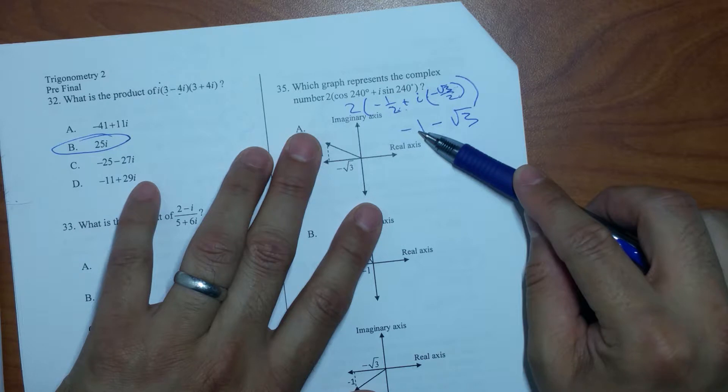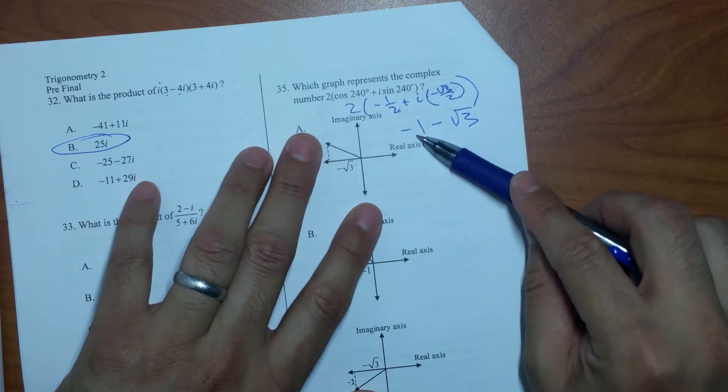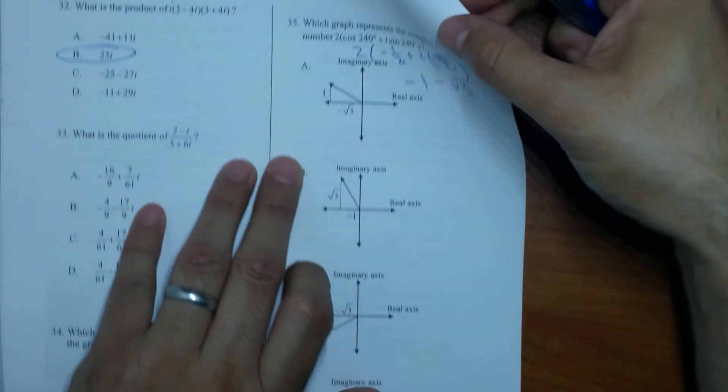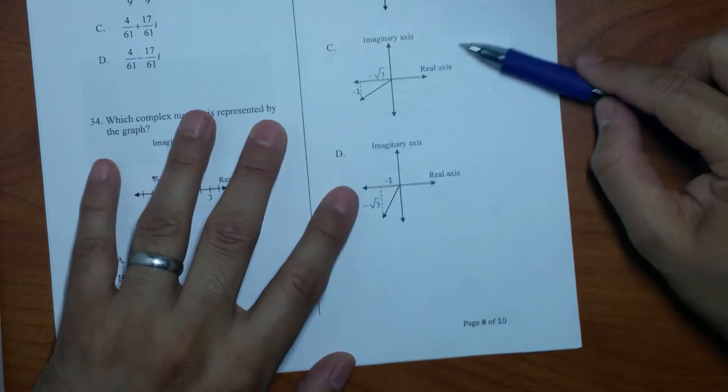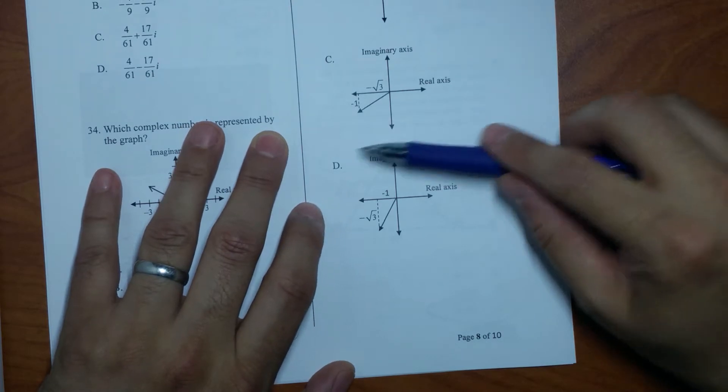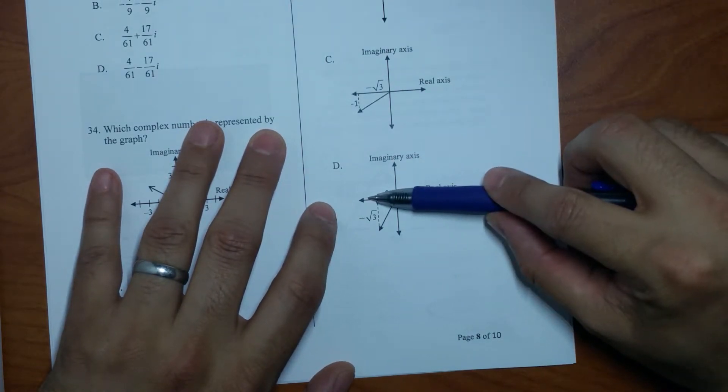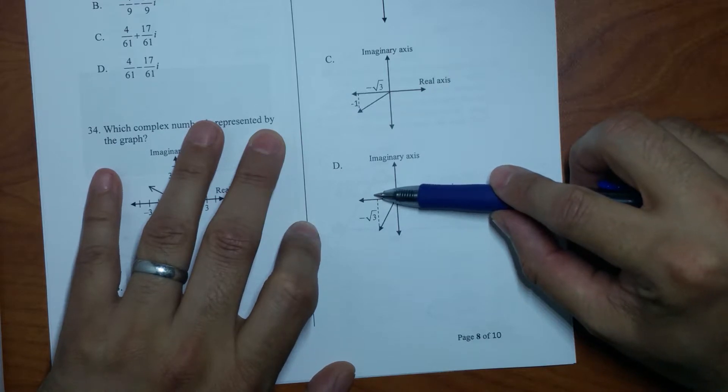That tells me in my real direction it's going negative 1, so that means to the left or right? Left. And the imaginary direction it goes down rad 3. So let's take a look. That means my answer has to be D. So my real is negative 1 and my imaginary is negative rad 3, so my answer has to be D.